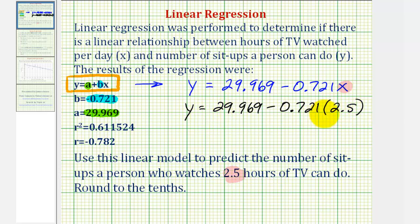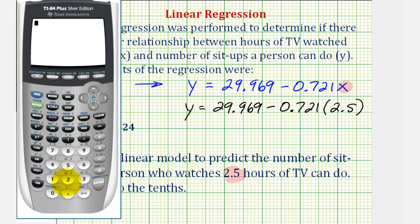Let's go and evaluate this on the calculator. So we'll have 29.969 minus 0.721 times 2.5.